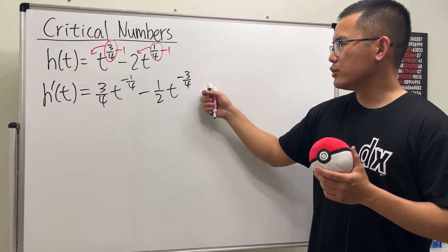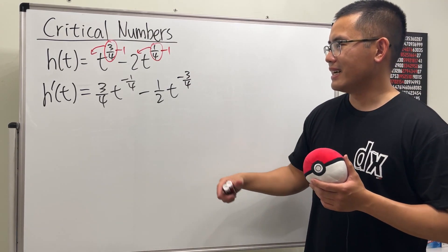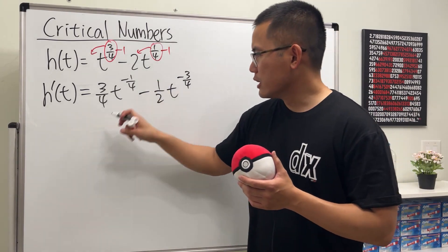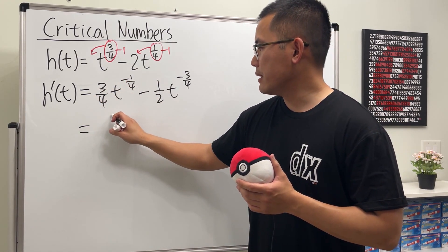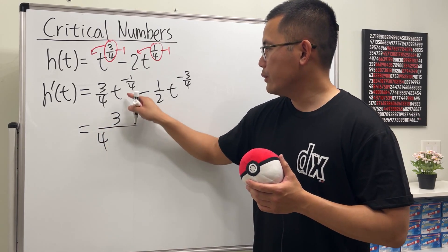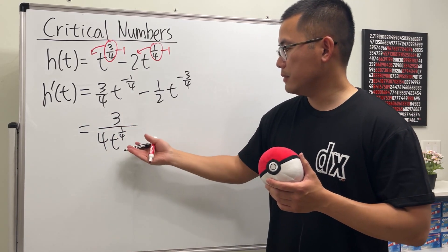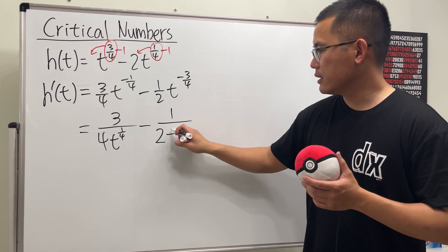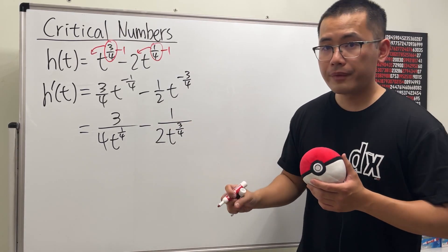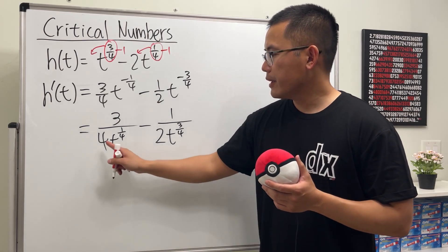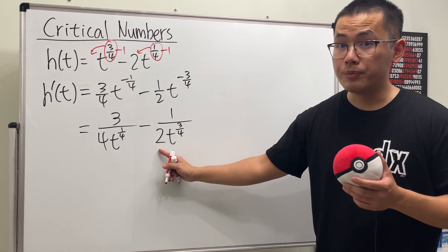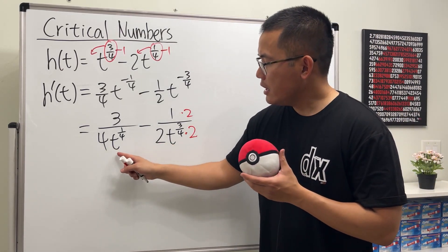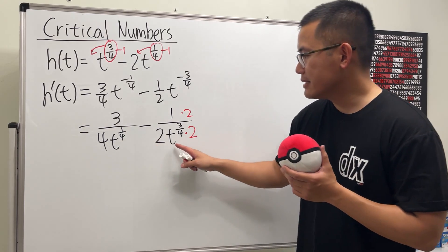Now instead of setting this to zero right away, we are going to combine the fractions first, because we have negative exponents. This part is the same as three over four divided by t to the one over four, minus one over two divided by t to the three over four. We need the same denominator — we have four and two, so we multiply the second fraction by two over two to get four.